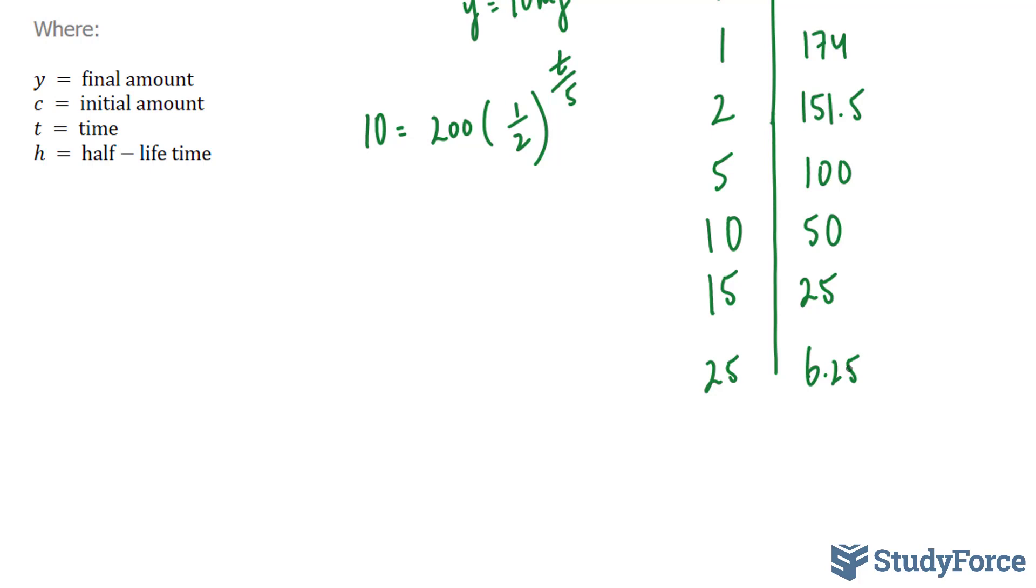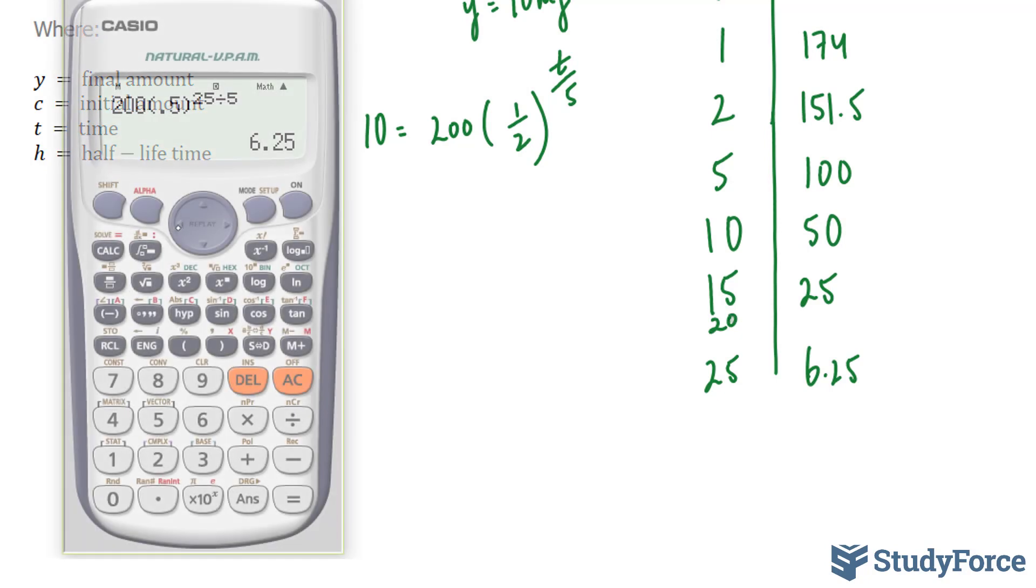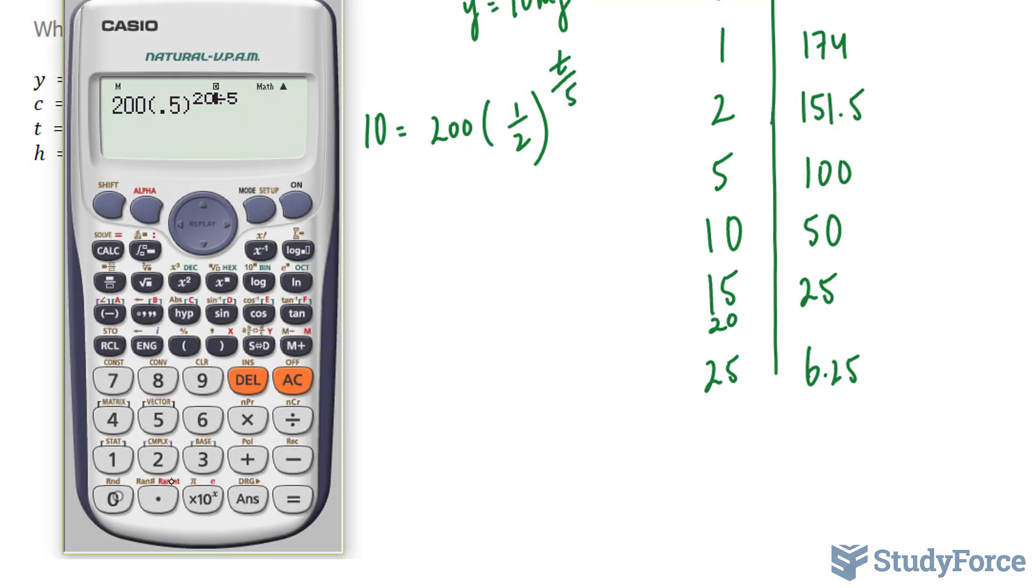So that's a little bit below 10. Now can we do a little bit better? Let's try 20. At 20, we have 12.5.